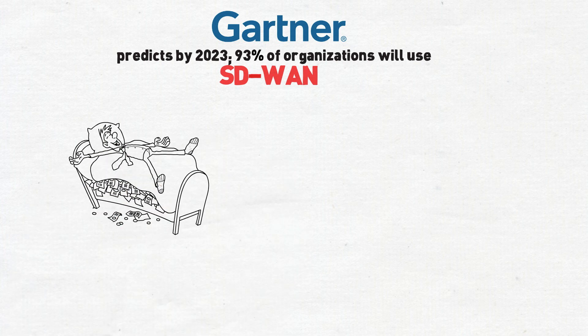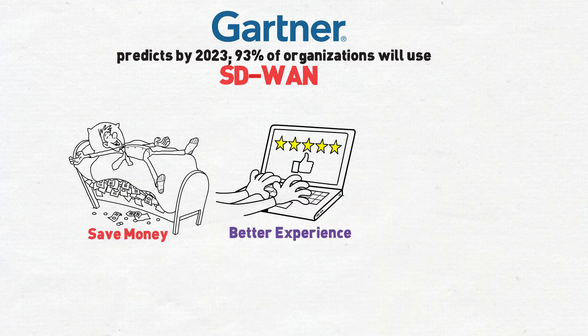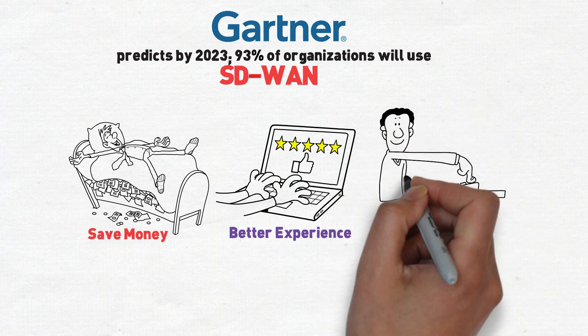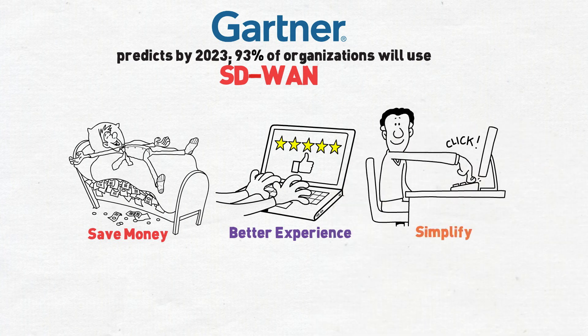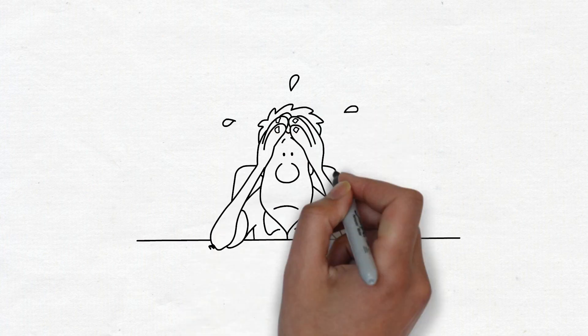Save money by not being as reliant on private circuits, better application performance with intelligent monitoring and steering, and simplified management with orchestrators and zero-touch provisioning. But with all of these moving parts come old and new security concerns.